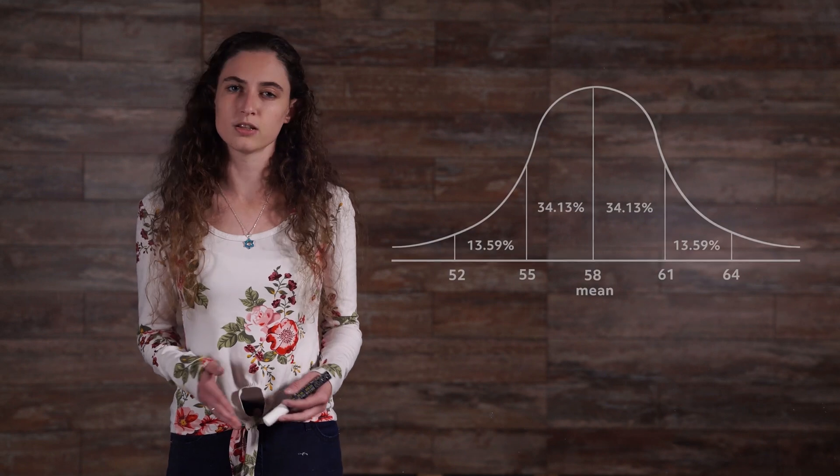In reality, our intuition would expect there to be a mix of students with most of the students around the average height and fewer students who are a bit shorter or taller, and even a few who are a lot shorter and taller than the average. And our intuition is right. This is what we call a normal distribution, and it looks like this.